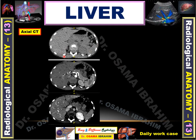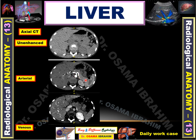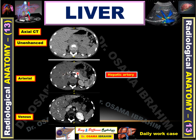This is axial CT imaging in different phases of the liver. The first phase is unenhanced CT — there is no contrast opacification of the aorta or inferior vena cava. The second one shows opacification of the aorta, so this is the arterial phase. The third one shows opacification of the portal vein and IVC, so this is the venous phase. These three phases can diagnose liver lesions, as the hepatic artery appears in the arterial phase. In the venous phase, the liver parenchyma is opacified by many vessels representing the portal vein and hepatic veins.